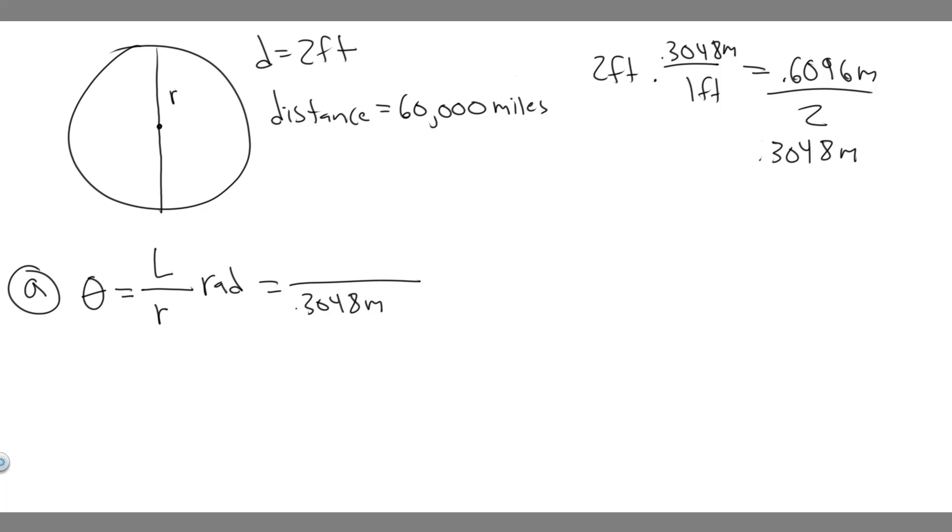Now we need the length. So the length is 60,000 miles, but we need it in meters again. So 60,000 miles, you need to know that for every one mile, one mile is the same as 1,609.34 meters. So go ahead and do this, 60,000 times 1,609.34. Miles cancel, and you'll get a big number, so 96,560,400. So this is in meters.